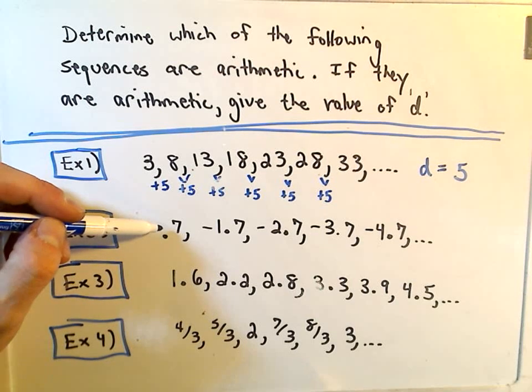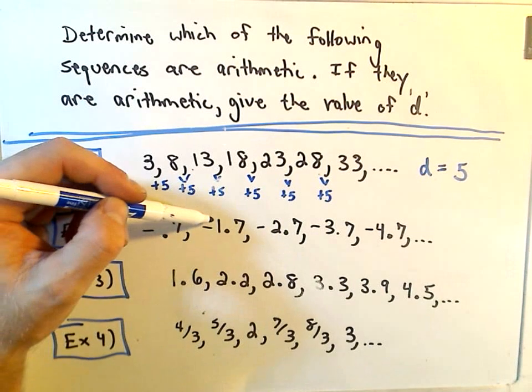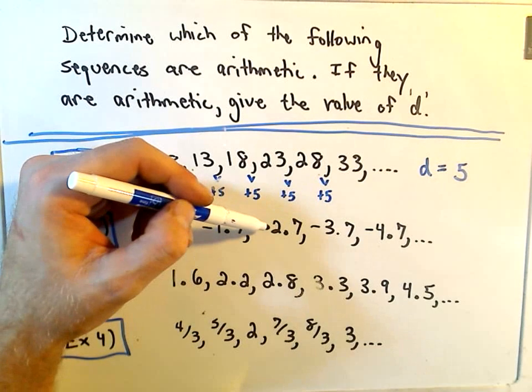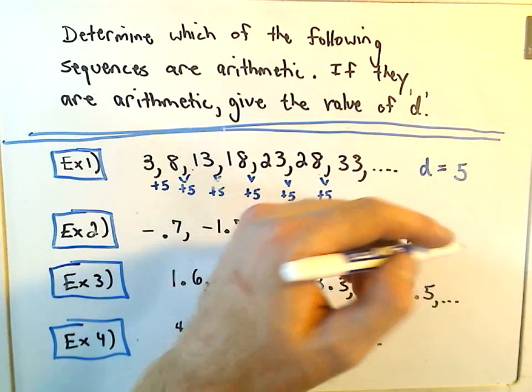Notice in my second example here, I start at negative 0.7. Then we go to negative 1.7, negative 2.7, negative 3.7, negative 4.7, etc.